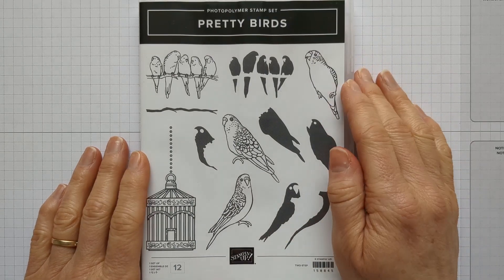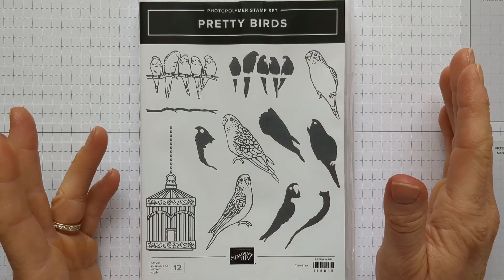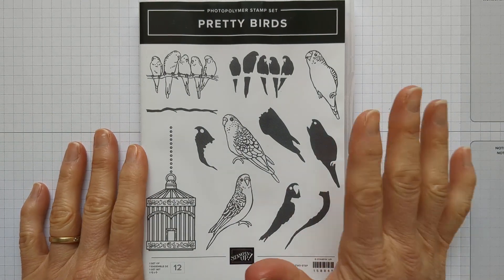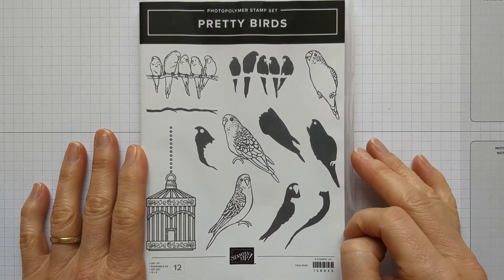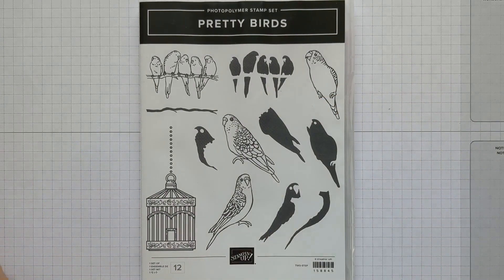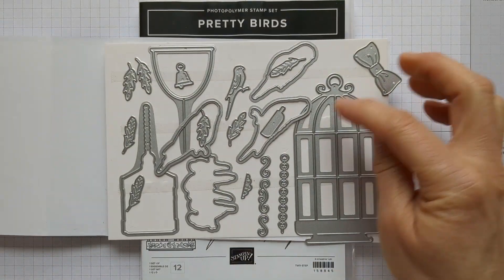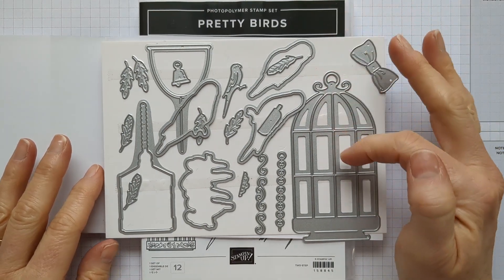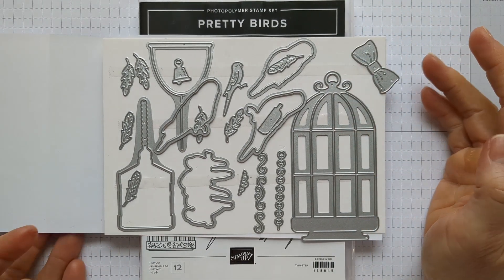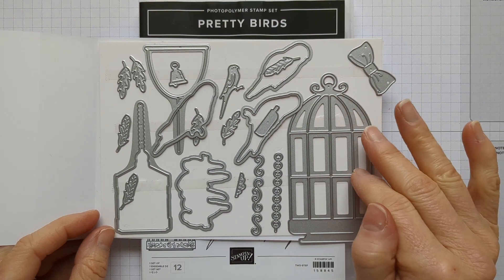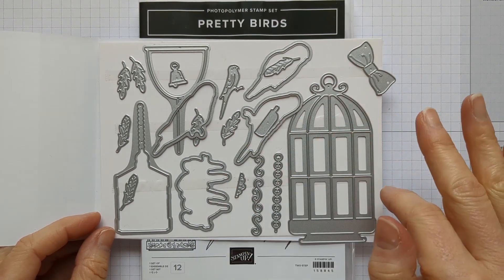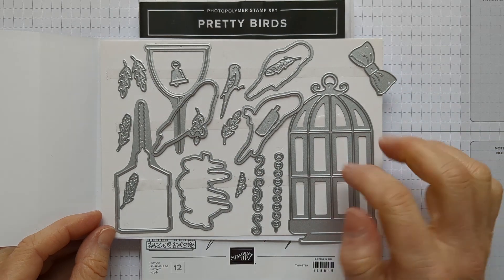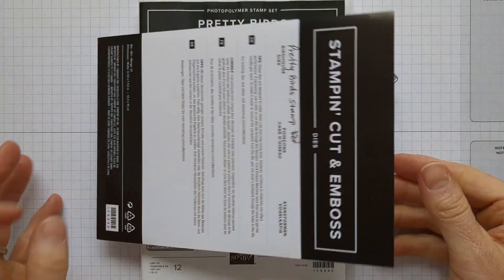We're going to be using the Pretty Birds stamp set, but you can take this same concept and use other stamp sets that you like. This one just really caught my eye and I absolutely love it. You can also purchase the die set either separately or as a bundle. When you buy stamp sets and dies together, you get 10% off. We're not going to use this for the cards, but at the end of the video when I show you how to fancy up the box, we're going to be using this die set.